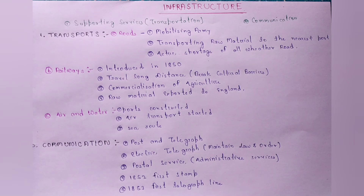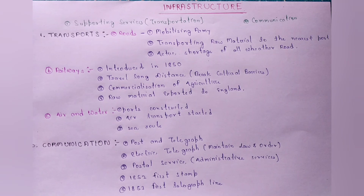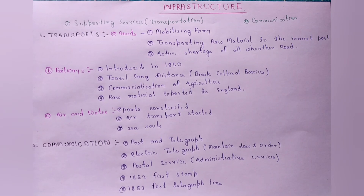Railways जो है वो 1850 में introduce हुआ था — यह बहुत ही important है क्योंकि इससे previous year questions में भी आ चुका है। 13 April 1853 को first train चला था Mumbai से Thane के लिए।